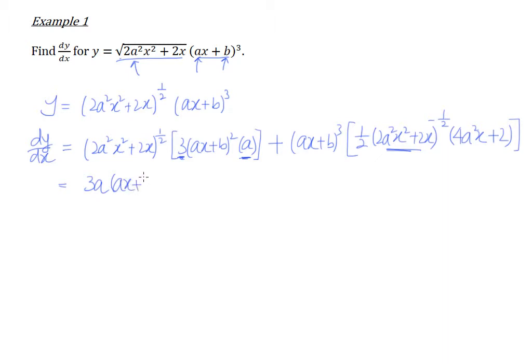We have this (ax + b)² and we have actually this one, which is the entire thing to the power half, which we can now write in the radical form, which is √(2a²x² + 2x). Here you go, this is the entire term here.